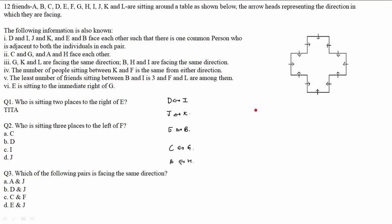Third point: G, K, and L are facing the same direction. As we know there are four directions — east, west, north, south — and 3 persons face each direction among 12. So G, K, and L face east, west, north, or south — 4 conditions are possible. The same applies for B, H, and I. This is a variable condition, so multiple cases are possible.